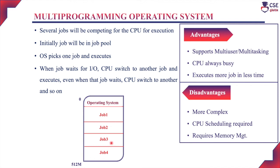Even when that job needs to wait for some IO devices, the CPU will switch to another job and so on. Likewise, the operating system will keep the CPU always busy. The advantages are: this operating system will support a multi-user or multi-tasking environment, the CPU is always busy, and it executes more number of jobs in less time. The disadvantages: since it has to deal with more number of jobs, it is a more complex task. CPU scheduling is required to determine which job will be picked from the job pool. Since more number of jobs are on and off with the CPU, it requires critical memory management.